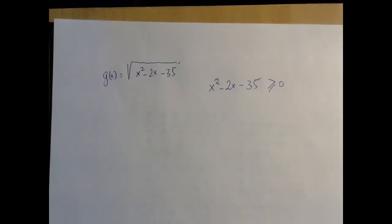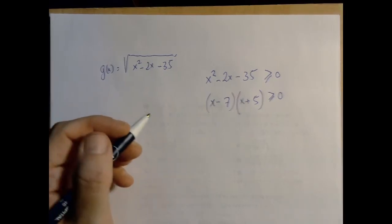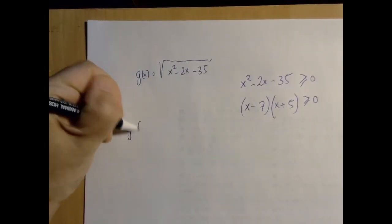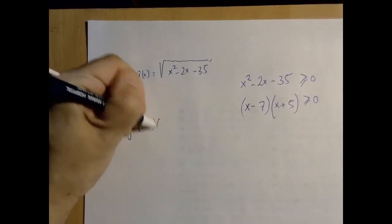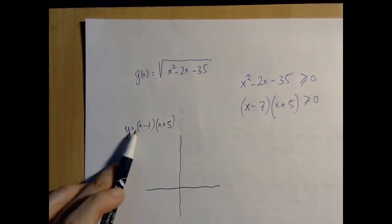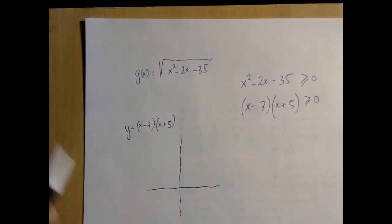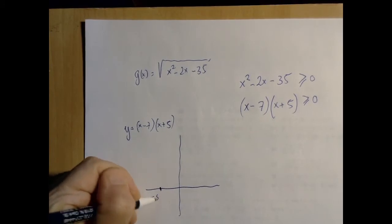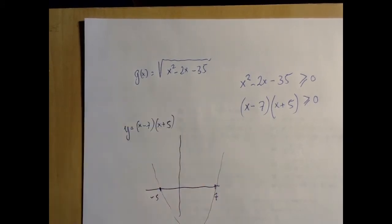So basically, we have to solve this quadratic inequality. If we graph y equals x minus 7 times x plus 5, we know that this is an upward opening parabola with x intercepts at negative 5 and 7, something like this.